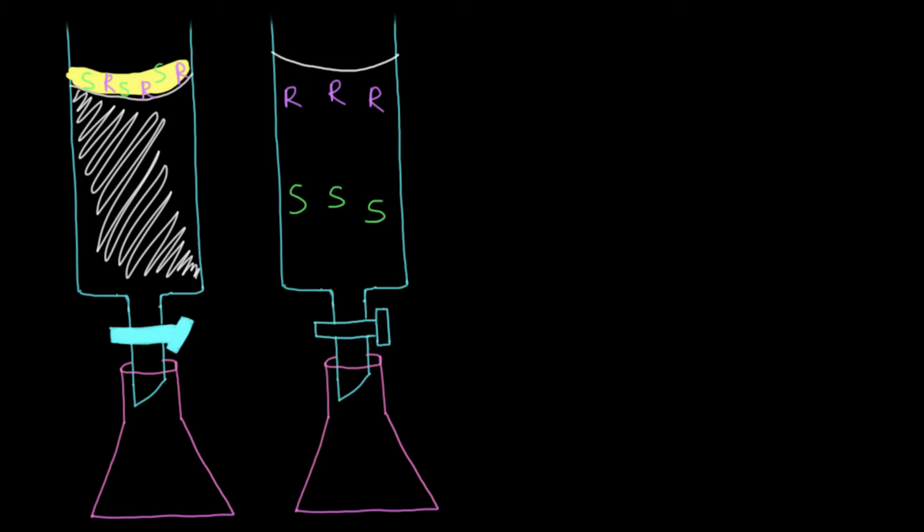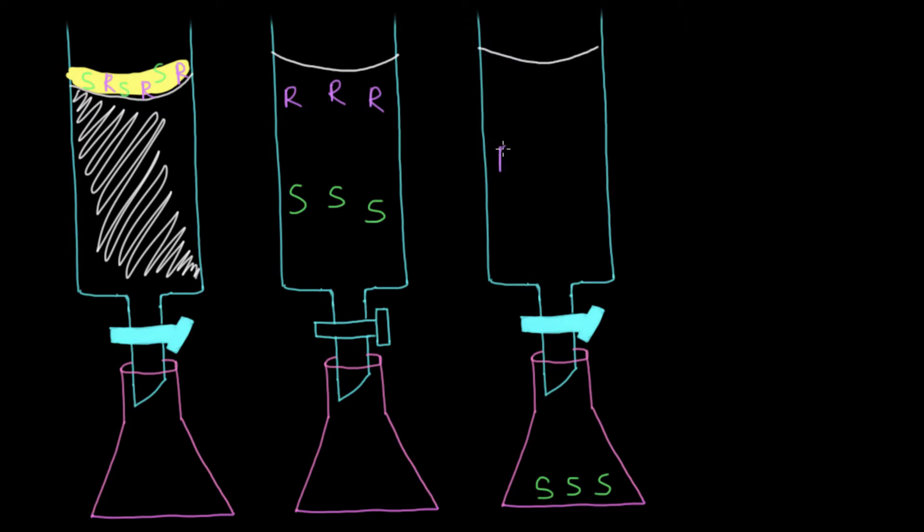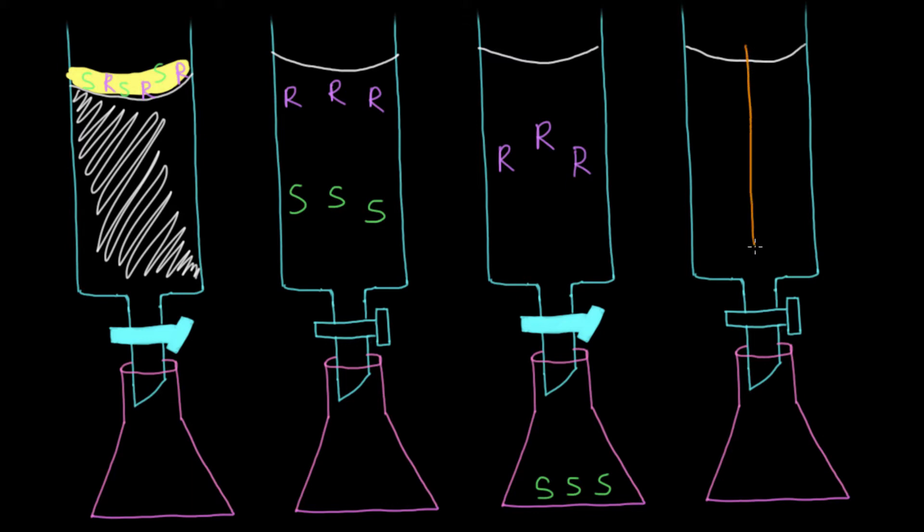Once you've collected all of the S enantiomers in your flask, all you'll have left in the column is the R enantiomer, which is pretty tightly bound to the chiral stationary phase. Next, what you do is when you have this column, you'd want to pour in lots of solvent so that you can get the R enantiomer to come out. Because as this pushes down through the column, it will take the R enantiomer with it, giving you just the R enantiomer in your flask.